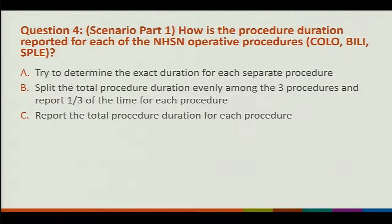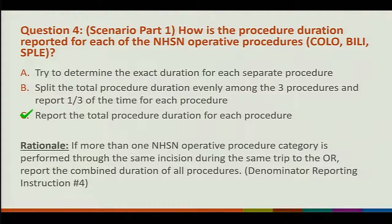Question 4: how is the procedure duration reported for each of the NHSN operative procedures? The correct answer is C. This is found in denominator reporting instruction number 4. If you have more than one NHSN operative procedure through the same incision, you use the entire duration time for each procedure.